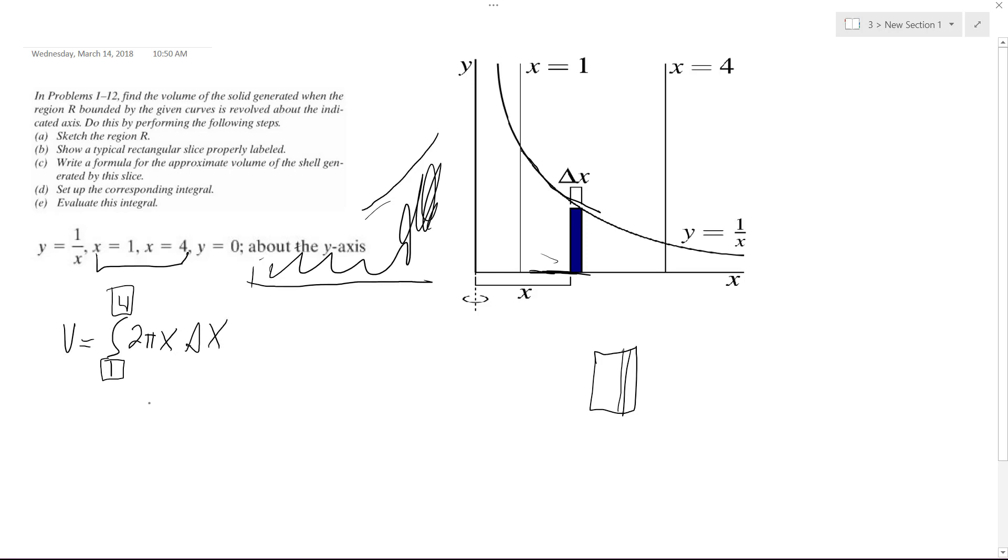So we integrate this and we simply end up with 2 pi from x squared. Oh, I made a mistake. Delta x, sorry, delta x is 1 over x.